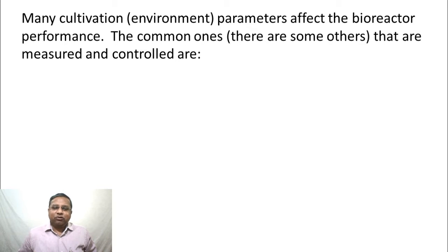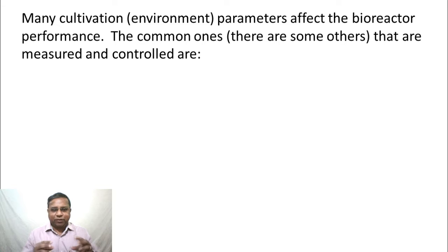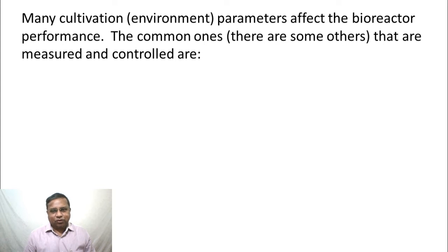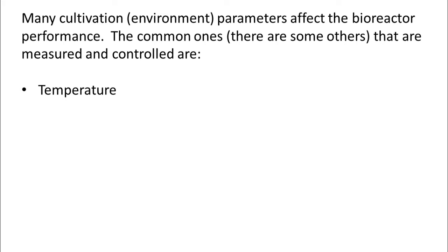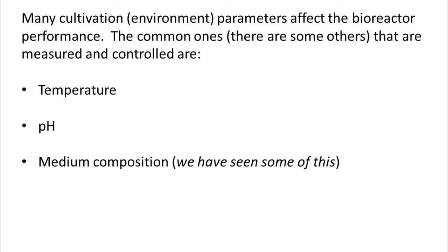Cultivation parameters are also called bioreactor environment parameters. The cells are the actual factories that produce a product in the bioreactor, so the parameters that affect the cellular environment are called environmental or cultivation parameters. Common ones include temperature, pH of the medium, and medium composition. We have already seen some aspects of medium composition — for example, the effect of substrate concentration on growth rate.